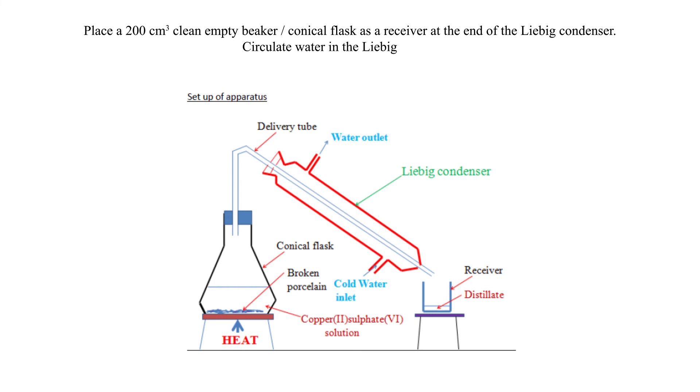Circulate water in the Liebig condenser. Heat the flask strongly on a tripod stand with wire mesh or gauze until there are no more visible boiling bubbles in the flask.